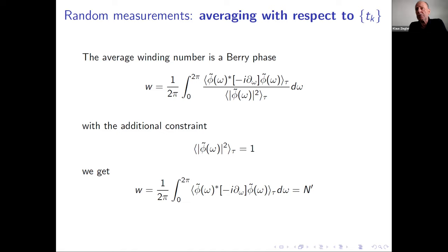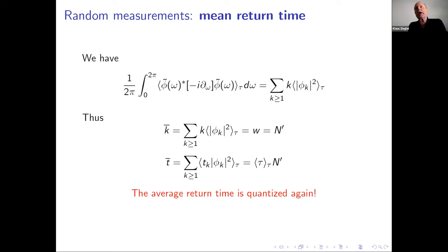It jumps when we have Hilbert space fragmentation. n' depends on and is an indicator of which situation we are in - either ergodic where n' equals the entire Hilbert space, or less. But it's always an integer. The average return times are given by these expressions. The number of measurements on average is n' equal to the winding number of the average system, or the average return time is just the average time step between measurements times this integer n', the dimension of the accessible Hilbert space. The average system again is quantized as we saw in the stroboscopic case.